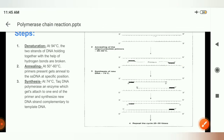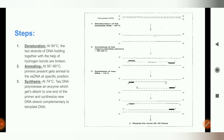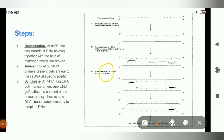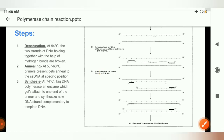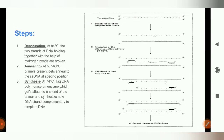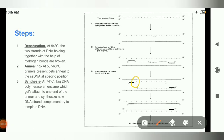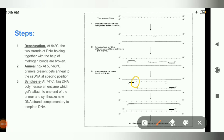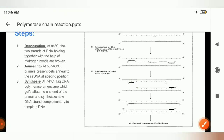After annealing of the primer there is a third step known as synthesis or extension. This synthesis or extension takes place at 74 degrees Celsius. At 74 degrees Celsius, an enzyme known as Taq DNA polymerase is used to synthesize a new DNA strand complementary to the template strand. Taq DNA polymerase gets attached to one end of the primer, as you can see here.